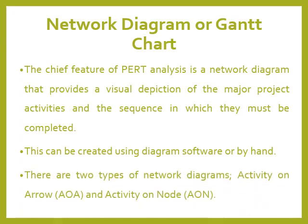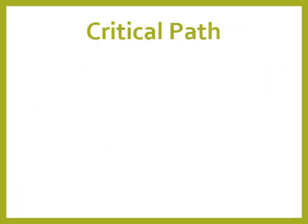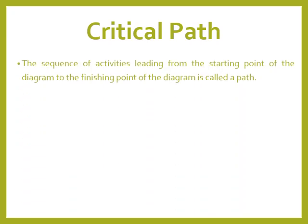There are two types of network diagrams: activity-on-arrow and activity-on-node. The critical path is the sequence of activities leading from the starting point of the diagram to the finishing point, and this sequence is called a path.